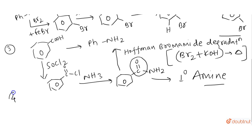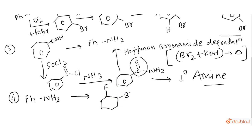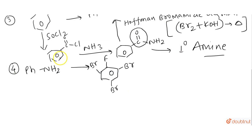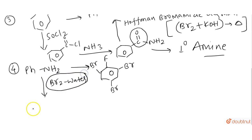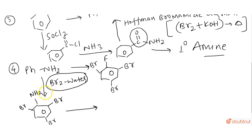The next question involves preparing 2,4,6-tribromofluorobenzene starting from aniline. First, we react aniline with bromine water. In the presence of bromine water, a rapid reaction takes place where bromine gets added to all three ortho and para positions.